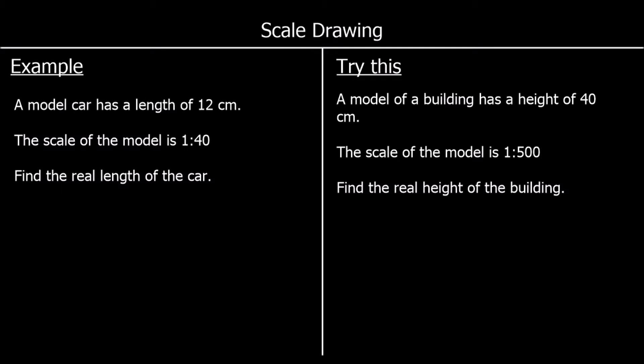The first example says a model car has a length of 12 cm. The scale of the model is 1 to 40, which means for every 1 cm on the model car there are 40 cm in real life. So all the dimensions of the real car are 40 times larger than on the model car. We need to find the real length of the car, knowing the model car has a length of 12 cm. For every 1 cm on the model there are 40 cm in real life.